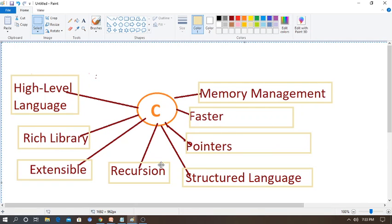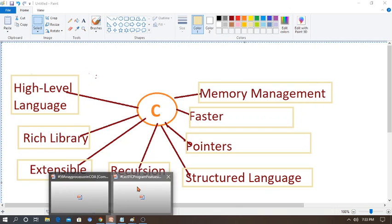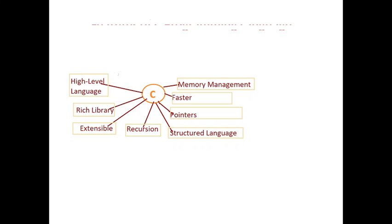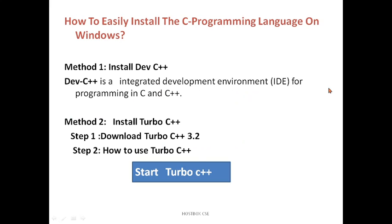Many features are available for C programming. Now let's go back to the PPT and continue with the installation. Installation is simple and easy. There are many ways. Generally many people use Turbo C. Method one: you can install Dev C++ — it is an integrated development environment (IDE) for programming in C and C++. Not only C; if you want to run C++ also, you can do that.